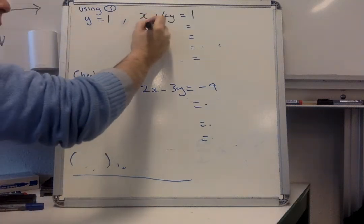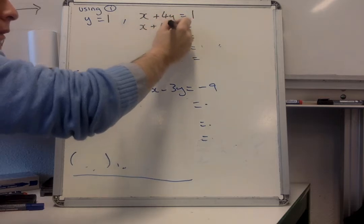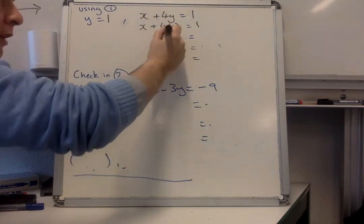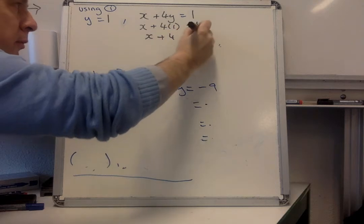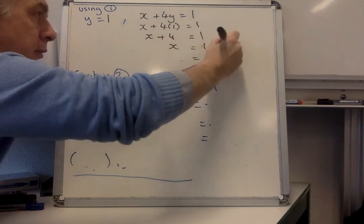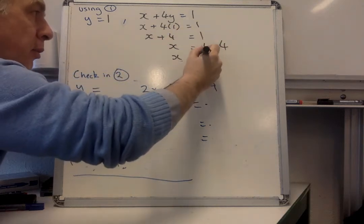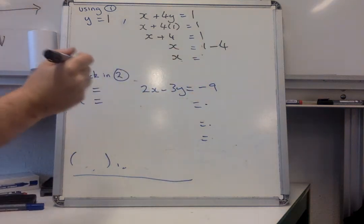So obviously we put the y in, and you should be able to work all this out without me. So that's going to be x plus 4, x minus 4, both sides at the same time, and you end up with minus 3.